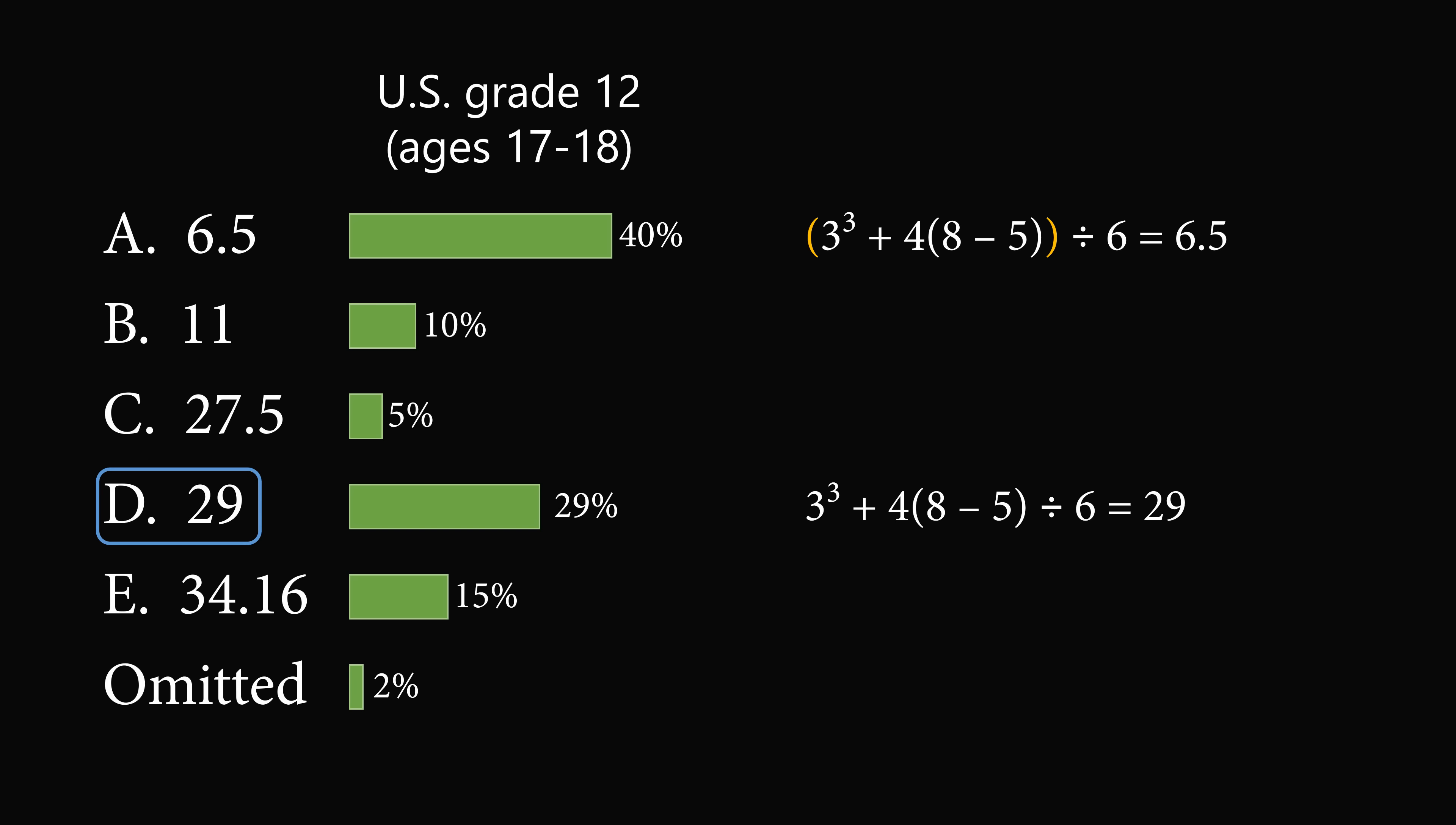The next incorrect choice would be because students concatenated the 4 and the 3 together to get 43, instead of multiplying them.